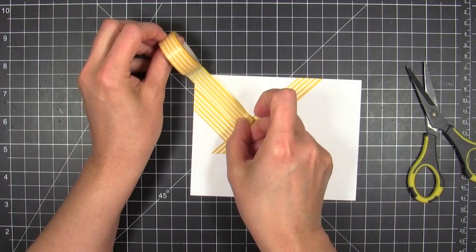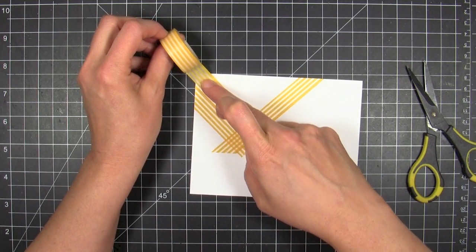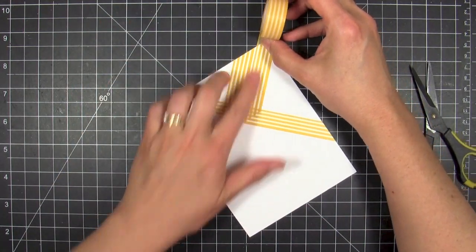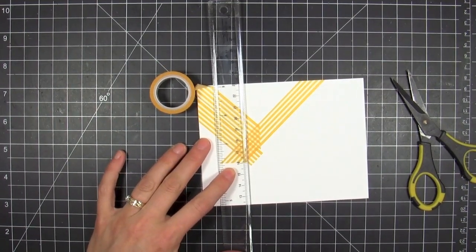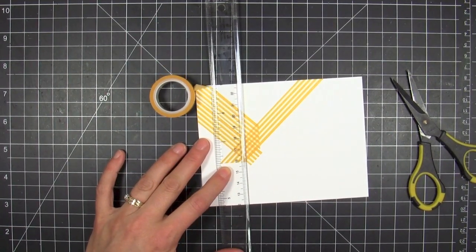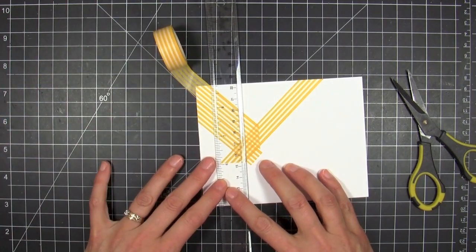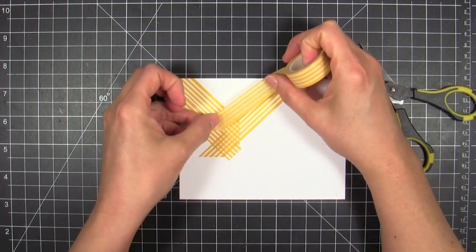Now you could stop with that, but I wanted to have a double layer of the tape, so I'm going to go ahead and repeat this process. Again, I'm using that pencil mark that I made originally as my guide. Here I'm using the ruler to show you where the center point of my chevron is going to be.